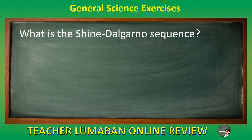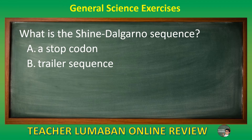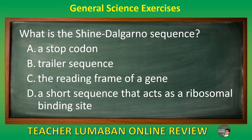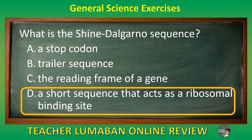What is the Shine-Dalgarno sequence? Letter A a stop codon. Letter B trailer sequence. Letter C the reading frame of a gene. Letter D a short sequence that acts as a ribosomal binding site. The correct answer is letter D: a short sequence that acts as a ribosomal binding site. The Shine-Dalgarno sequence is a short sequence that acts as a ribosomal binding site.